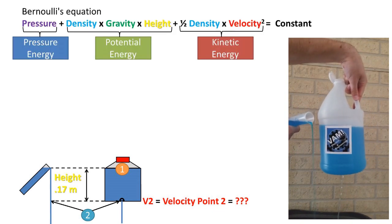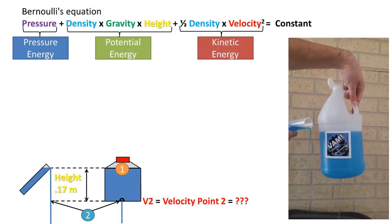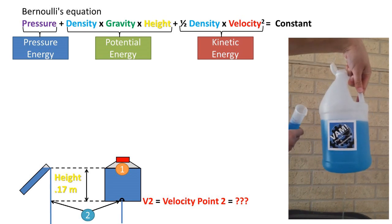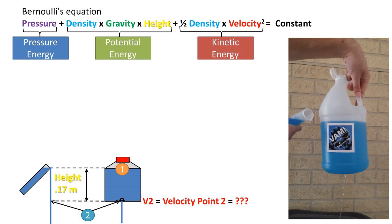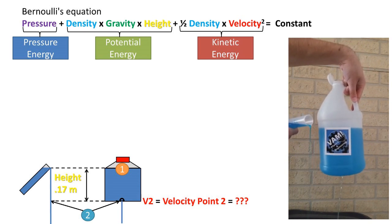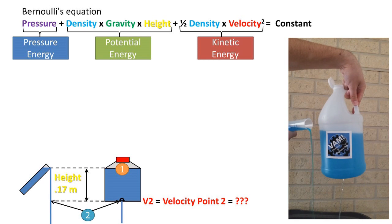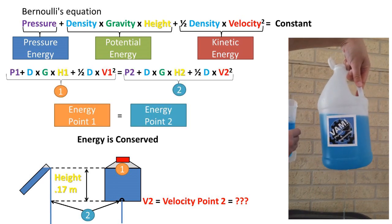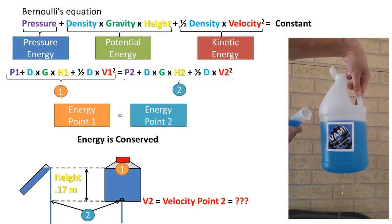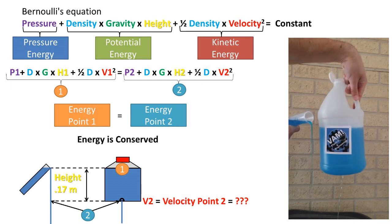We will be assuming a fluid with no friction or viscosity, so we can use the Bernoulli equation. The Bernoulli equation states that the pressure energy plus the potential energy plus the kinetic energy equals the total energy in the fluid. Being that energy is conserved, we can set the total energy, or Bernoulli equation, at point 1 equal to the Bernoulli equation at point 2.